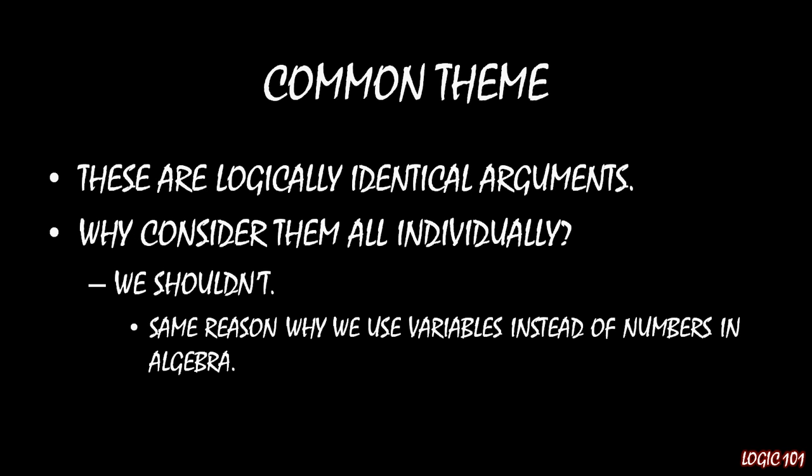Now, when we have this common theme, we should be at least a little bit intrigued because these are logically identical arguments. If something, then something else, something, therefore something else. Each and every one of those examples follows that form. So you might ask yourself then, why should we consider each of those individually when we could consider them all together at once?